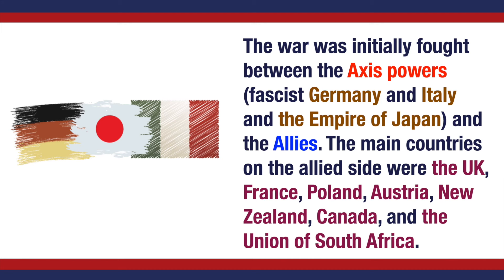The war was initially fought between the Axis powers, fascist Germany and Italy and the Empire of Japan, and the Allies. The main countries on the Allied side were the UK, France, Poland, Austria, New Zealand, Canada, and the Union of South Africa.